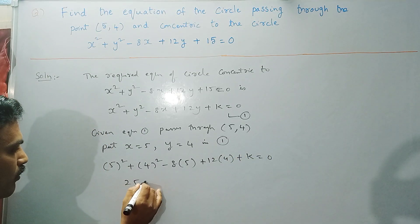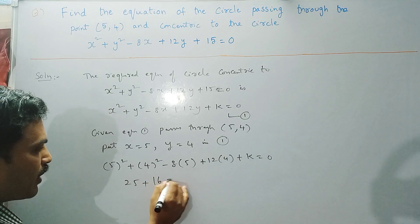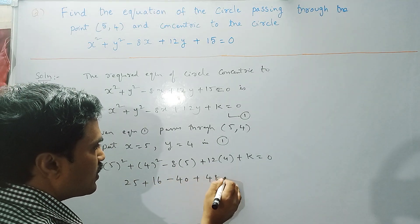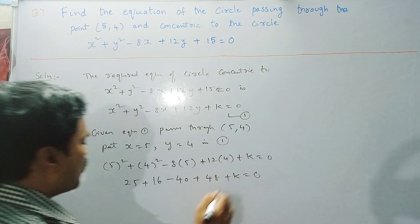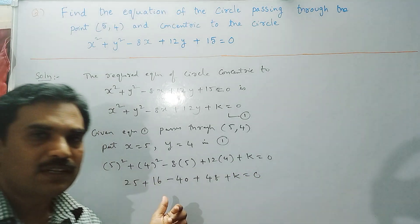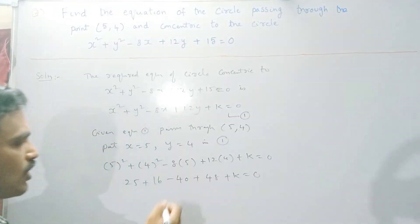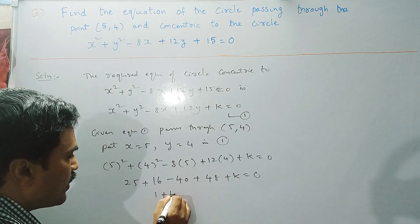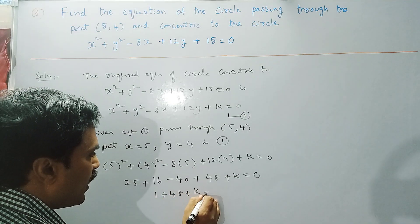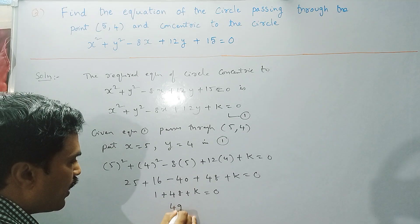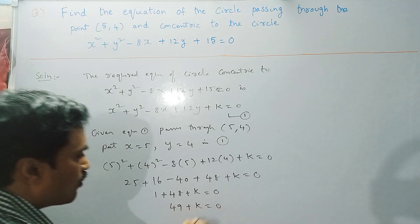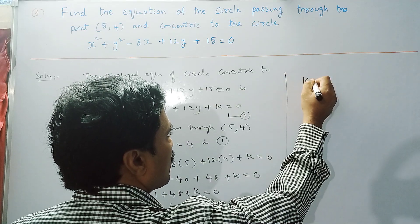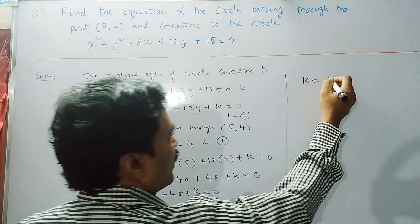What is 5²? 25. And 4² is 16. So we have: 25 + 16 − 40 + 48 + k = 0. What is 25 + 16? That is 41. So 41 − 40 = 1, giving us 1 + 48 + k = 0, which is 49 + k = 0. Therefore, k = −49.